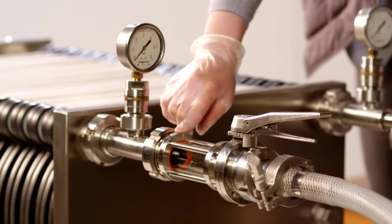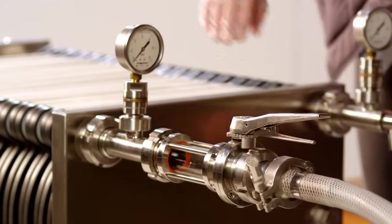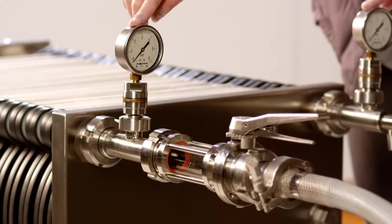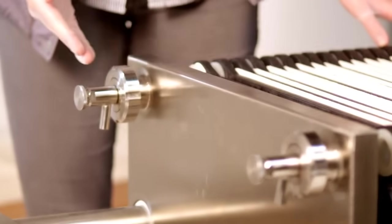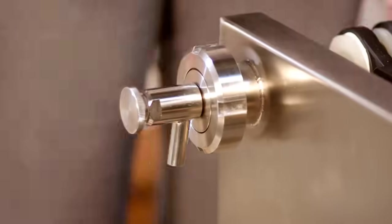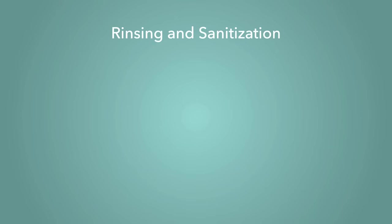Using sanitary sight glasses, valves, and pressure gauges will be important tools during the filtration process. All other ports should either be capped or equipped with a vent or drain. At this point, the machine is ready to rinse and sanitize.